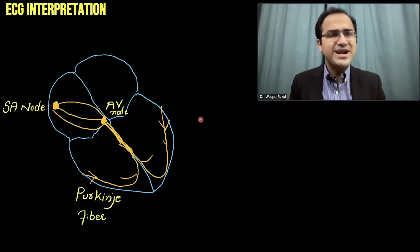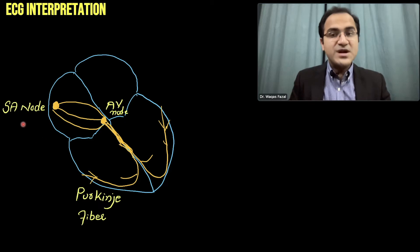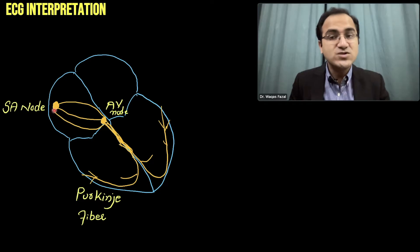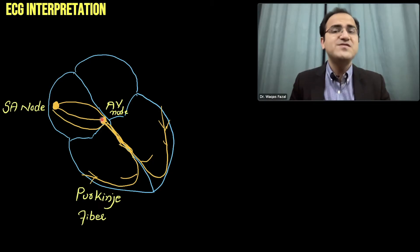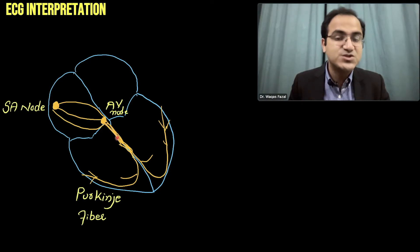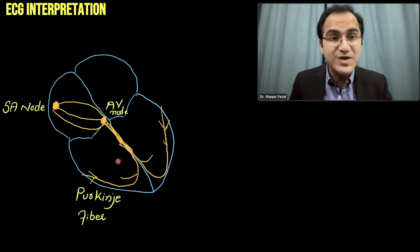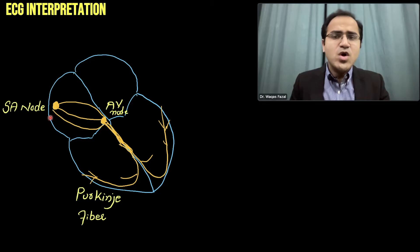What does ventricular rhythm mean? In our heart, the SA node is the basic pacemaker. It produces electrical currents and those electrical currents cause contraction of the atria. These electrical currents spread out to the AV node through the internodal pathways, and the AV node sends these signals through the bundle branches to the Purkinje fibers, which then causes contraction of the ventricles. That's how the heart beats.